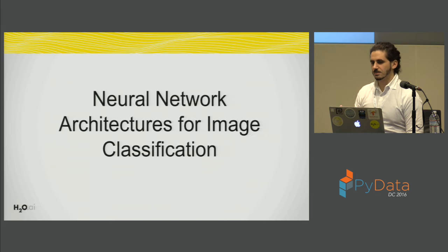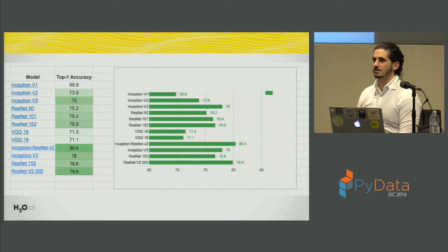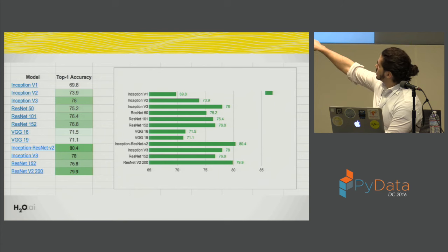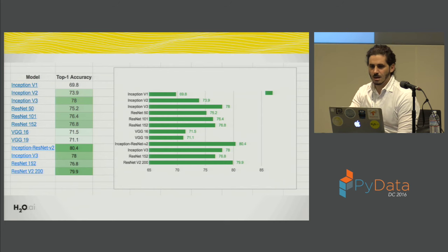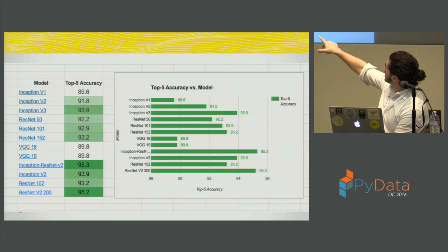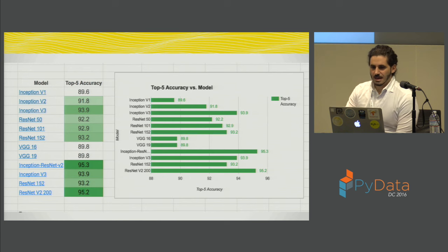One of the most successful applications is image classification. We can see how far we've gotten in accuracy. This is top-1 accuracy — you give an image to the algorithm and it gives you exactly the class of that image. With the latest one, Inception ResNet V2, which came out a couple of weeks ago, we're already at about 80%. For top-5 accuracy, Inception ResNet goes to 95.3%. It's estimated that a trained human's accuracy is below 95 — around 94. That's part of the excitement.